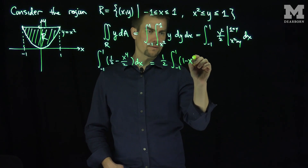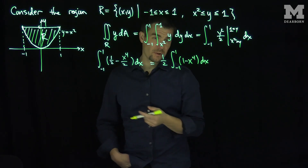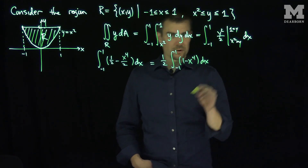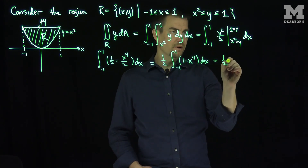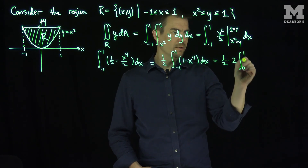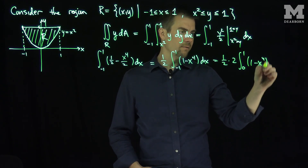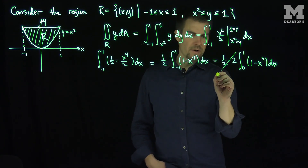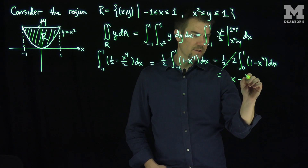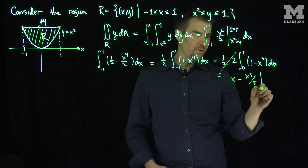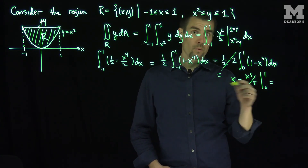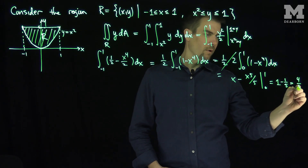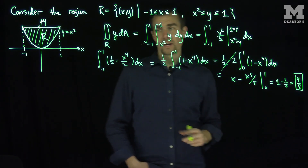So this will be one-half times the integral from negative 1 to 1 of 1 minus x to the 4th power dx. Now this function 1 minus x to the 4th is an even function, so I can write this as one-half times 2, the integral from 0 to 1, of 1 minus x to the 4th dx. The 2 and the one-half cancel out, and if I integrate this I get x minus x to the 5th over 5 from 0 to 1, which is 1 minus one-fifth, which is 4 fifths. So my integral is 4 fifths.